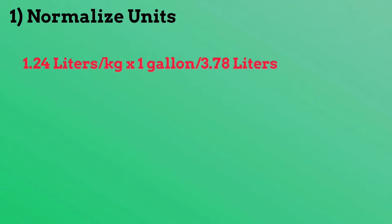First, let's normalize the units for our uptake rate to match the units for volume of contamination. Realizing that there are 3.78 liters in one gallon, we can use this to convert our uptake rate of 1.24 liters of contaminant per kilogram of plant to 0.33 gallons of contaminant per kilogram of plant.